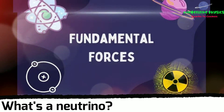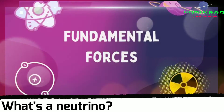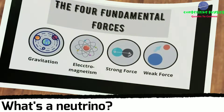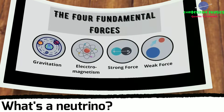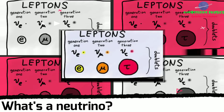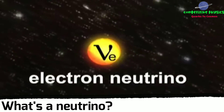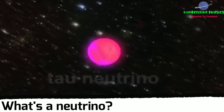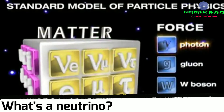Of the four fundamental forces in the universe, neutrinos only interact with two: gravity and the weak nuclear force. Particles with this property are termed leptons. In addition to the electron and its antiparticle, the positron, the charged leptons include the muon, the tau, and their antiparticles.